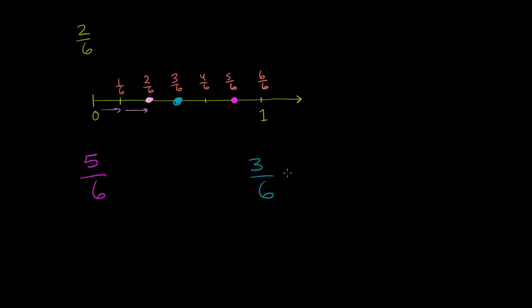And you may or may not know 3 sixths is the same thing as 1 half. If you divide 3 by 3 and 6 by 3, you're dividing the numerator and the denominator by the same thing, you get 1 half. And that makes sense because this is exactly 1 half of the way between 0 and 1.